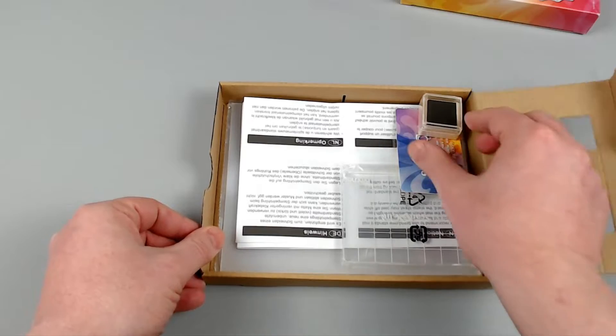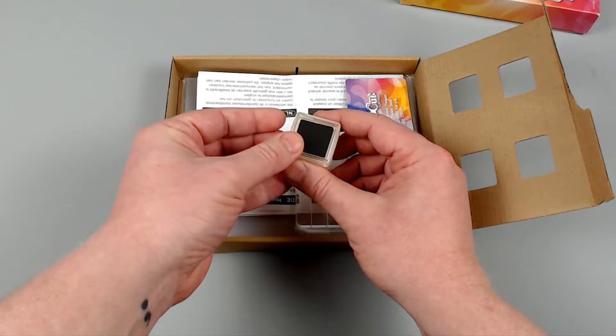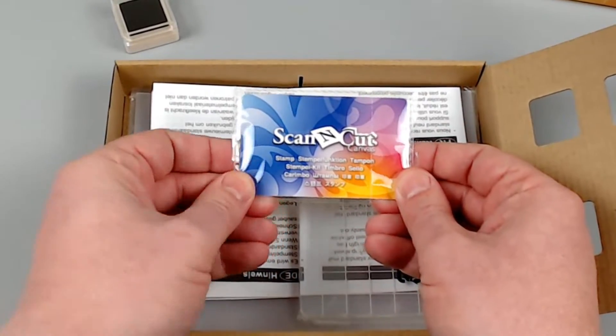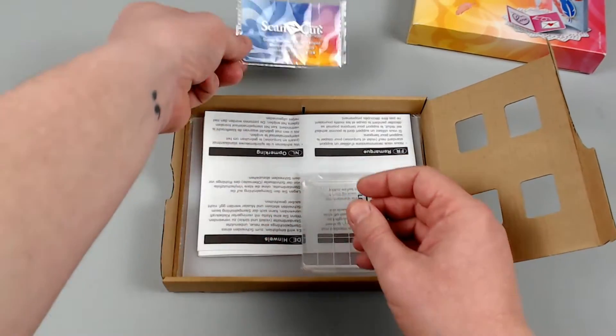The first thing that I find is the ink pad. Great if you have never done any rubber stamping before. You don't need to go and find one of those. Next is the activation card. This is what is going to unlock the bonus designs in Canvas workspace.